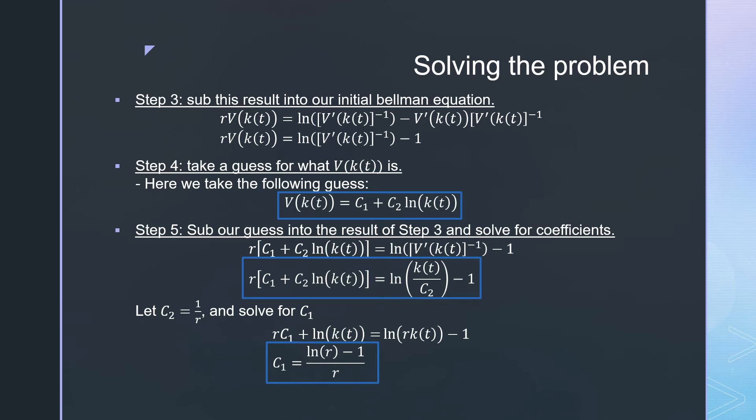Step five is taking our guess for this result and substituting it into our result from step three. We get the following result down here.